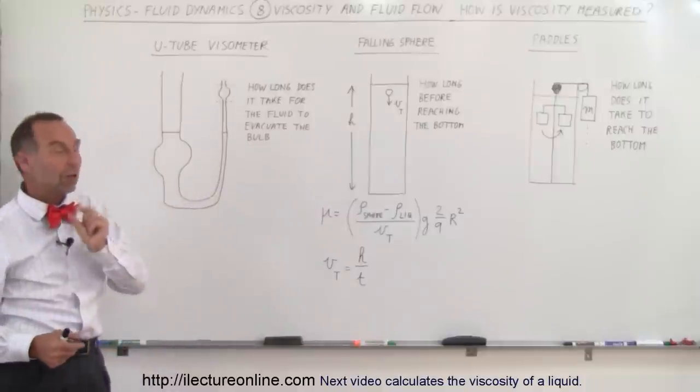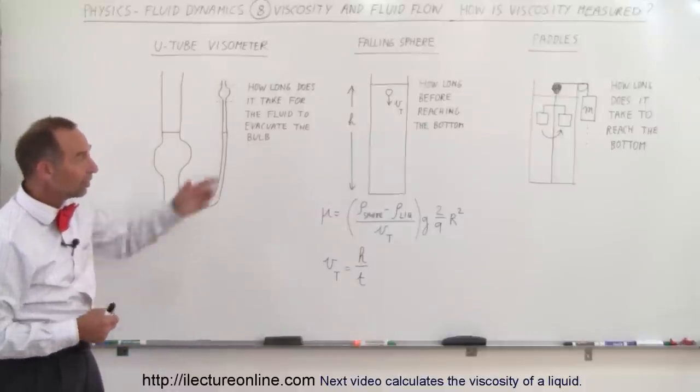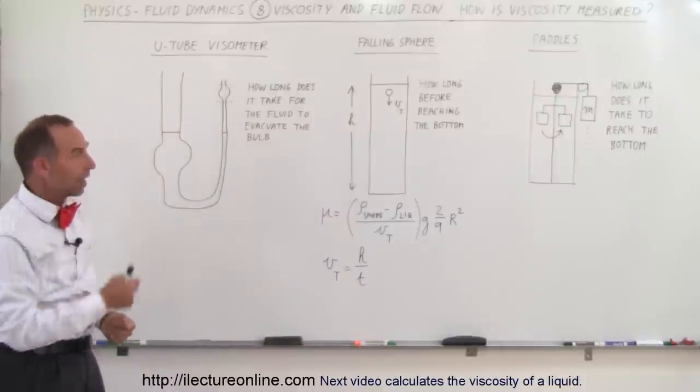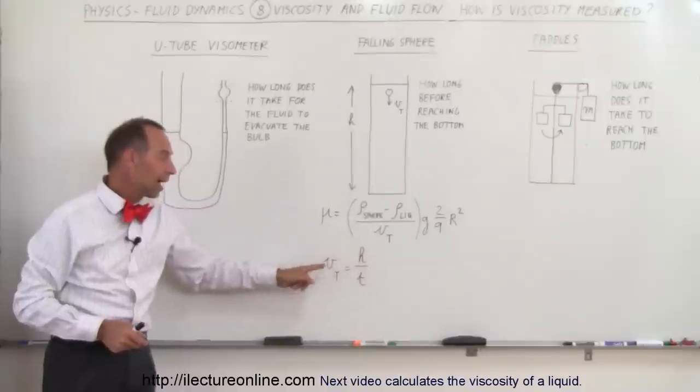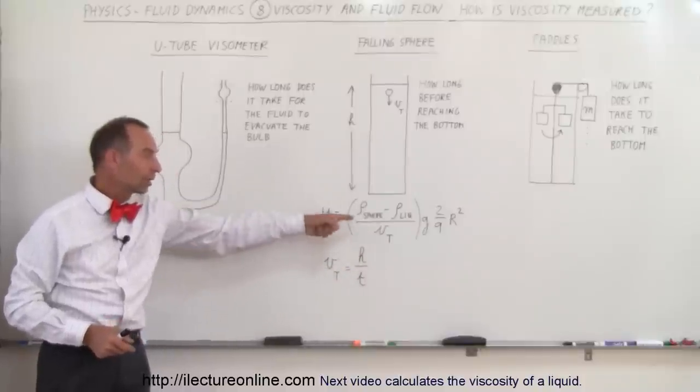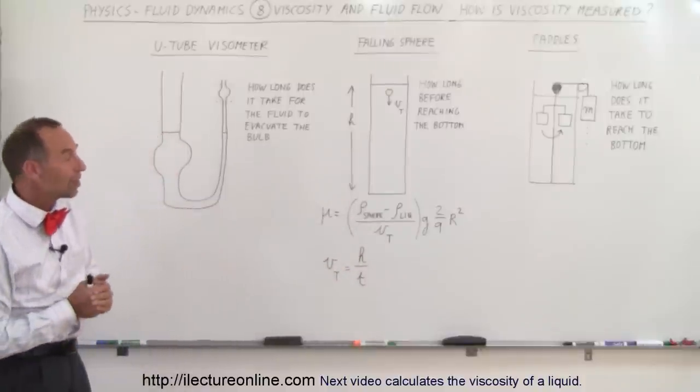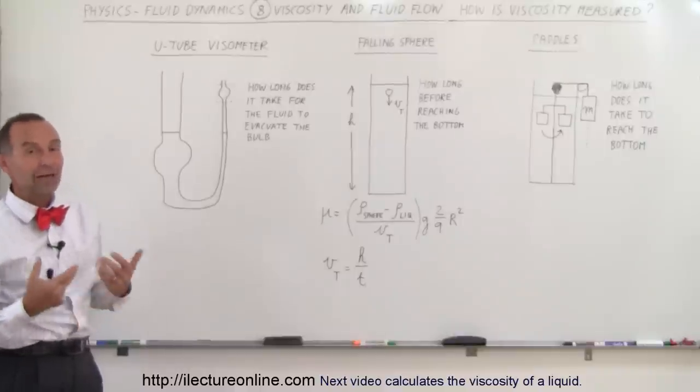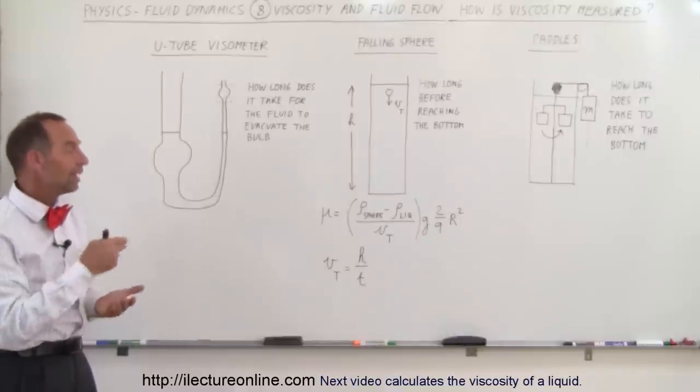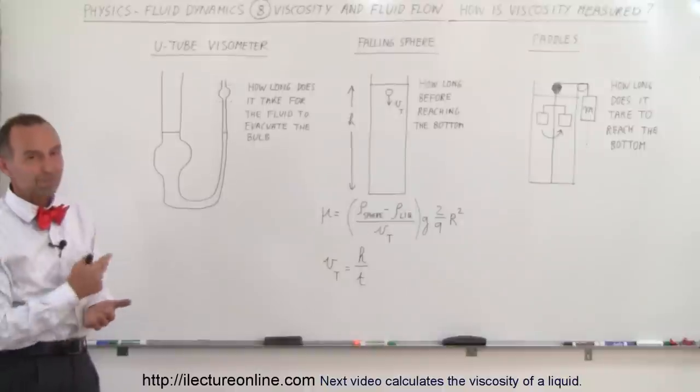All you need to do is just get a small little heavy sphere like a metal sphere, a tube, measure the height, let it drop, measure how long it takes. The height divided by time is the terminal velocity. You plug it into your equation, and out pops the viscosity. Of course, the units in that case, if you use all SI units, would be pascals times seconds, and that's how we do that.